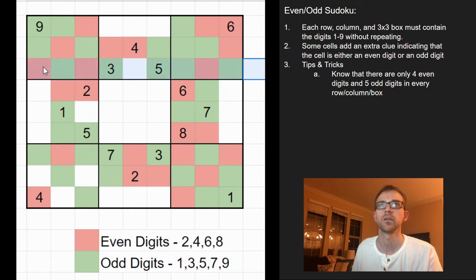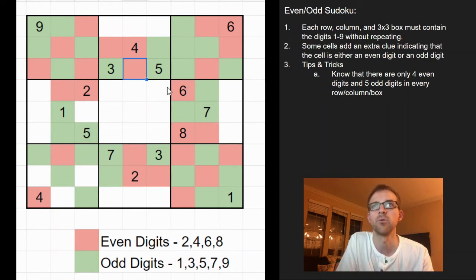So if we look here, we have 1, 2, 3 red cells. We need 1 more. So that's it right there. And I would continue to scan until I can't figure out any more cells, which they're going to be even or odd.